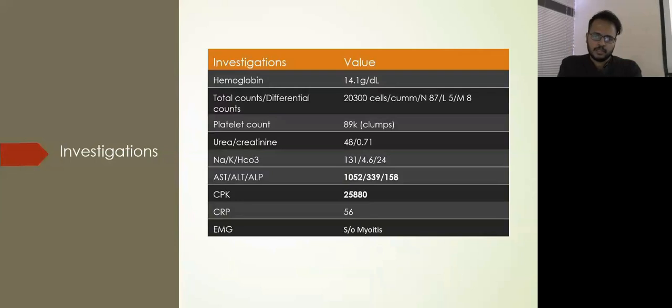Our patient's investigations: hemoglobin was 14, total counts 20,000, platelet 89,000 with clumps. Renal functions were normal. AST, ALT, and ALP were elevated with a CPK of 25,000 and CRP of 56.